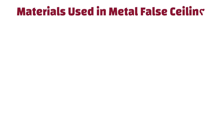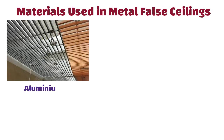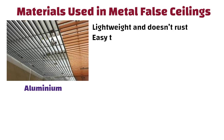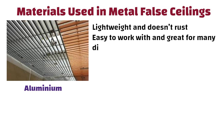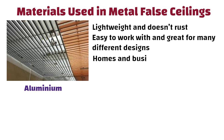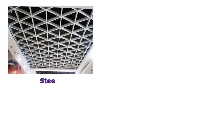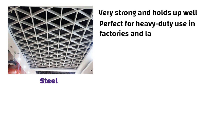Now let us understand materials used in metal false ceilings. Aluminum is lightweight and doesn't rust, which makes it easy to work with and great for many different designs. It is commonly used in both homes and businesses because it is strong and flexible. Steel is very strong and holds up well, so it is perfect for heavy duty use in factories and large buildings.